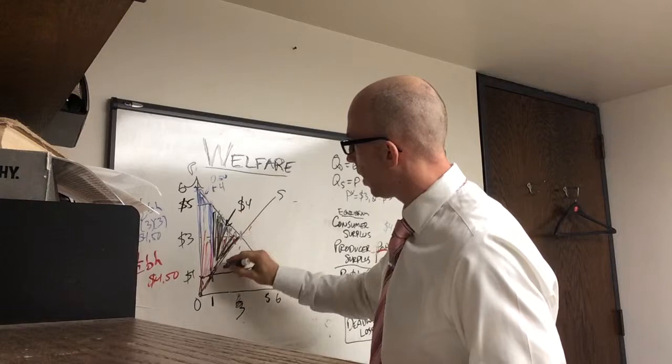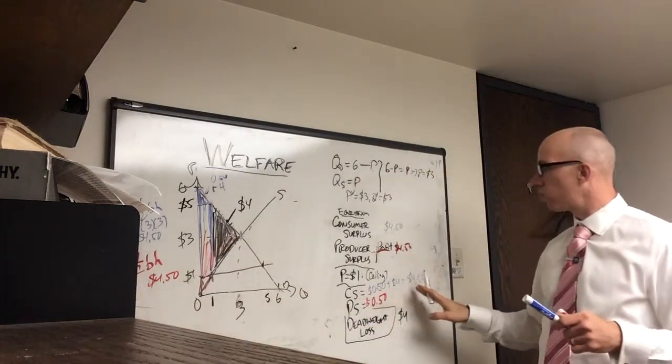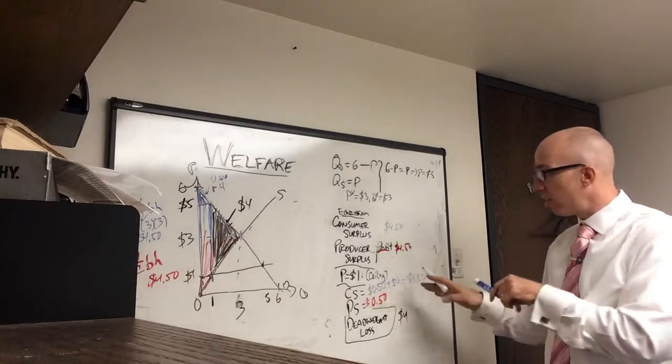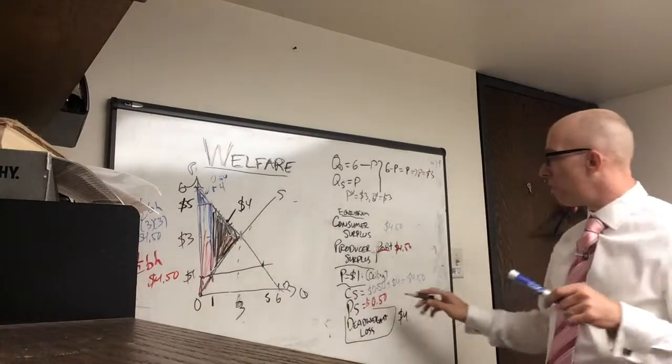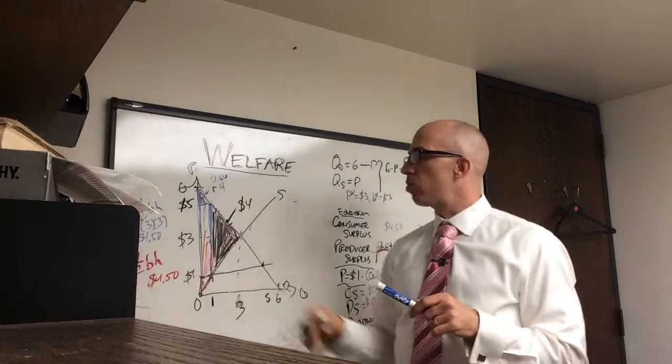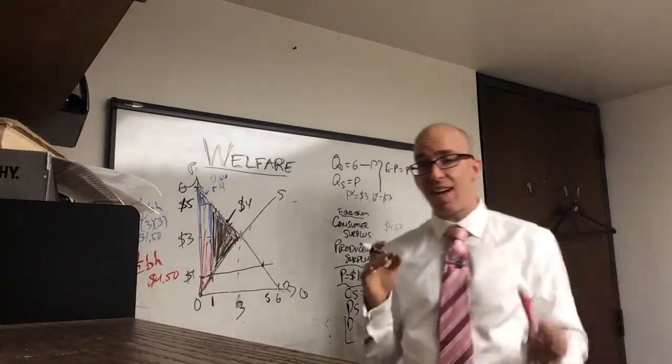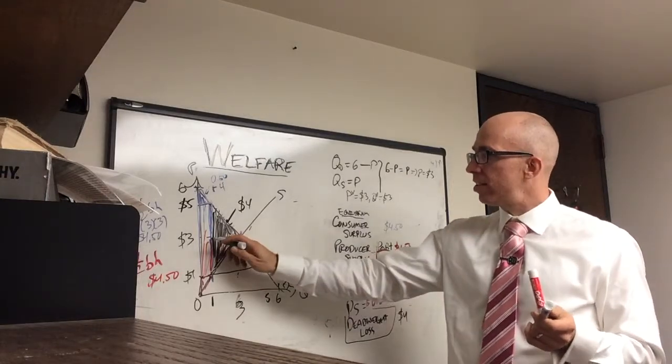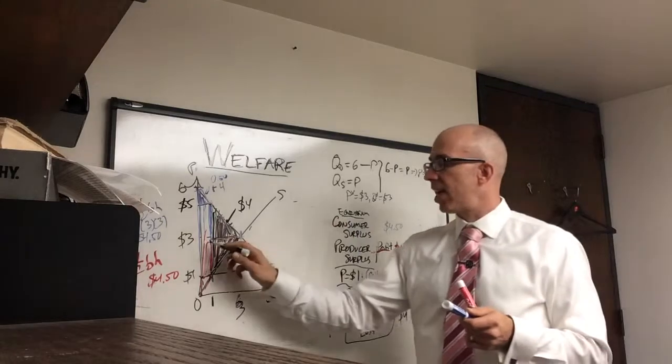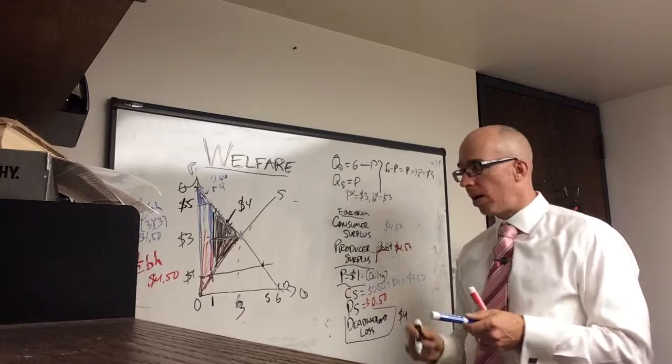This deadweight loss is lost to everyone. Now consumer surplus went up. Actually, it's about the same. It could go up, it could go down. In this case, it exactly canceled out. Producers definitely went down. So you think that consumers would be a little happy because they would see this lower price, but they're actually finding that it's a balancing act. They lost two opportunities to buy the product, and that's exactly canceled out by the fact that the one that they did buy made them a little bit happier.